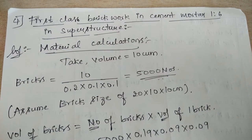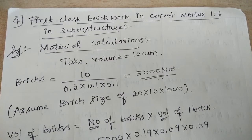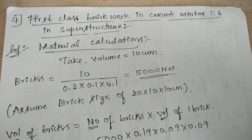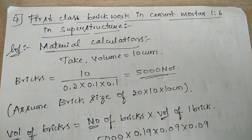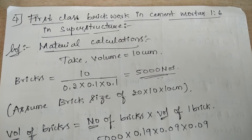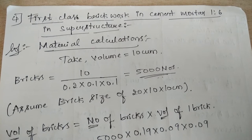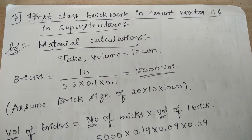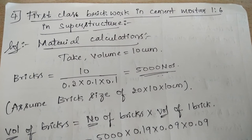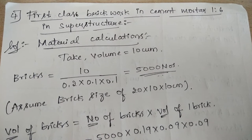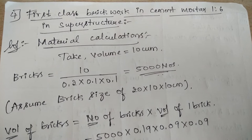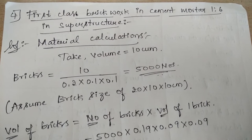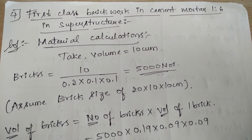Let us do the rate analysis for the next item of work, that is first class brick work in cement mortar 1 is to 6 for superstructure. Starting with the material calculation, let us assume a volume of 10 cubic meter.